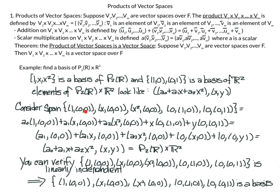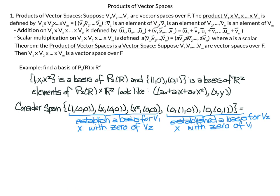At this point we've shown these basis vectors span the space. We also need to verify they're linearly independent, but that's not terribly difficult, and therefore the set of vectors is a basis. The strategy is: take a basis for V1 and cross it with the zero vector of V2, then concatenate with a basis for V2 crossed with the zero vector of V1. This is the strategy you want when finding a basis for the product of vector spaces.